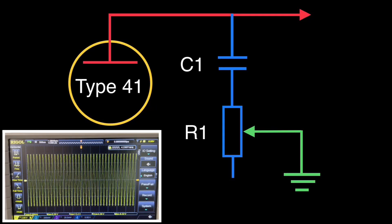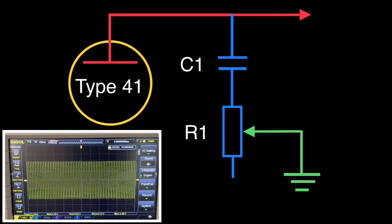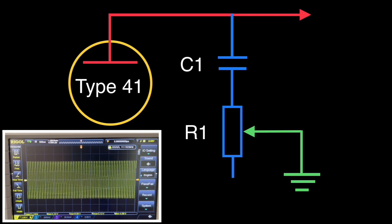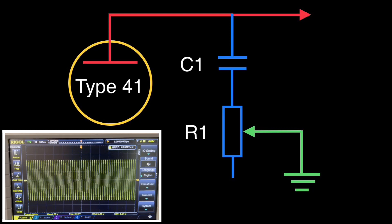And with R1 positioned fully counterclockwise, that is closer to ground, you can see me rotating the signal generator back up toward 10 kilohertz and how the response itself changes.